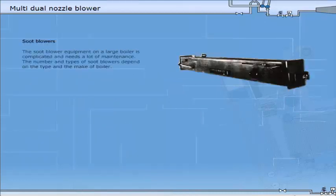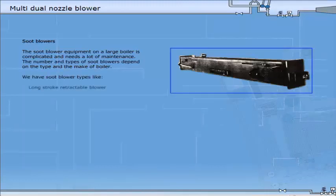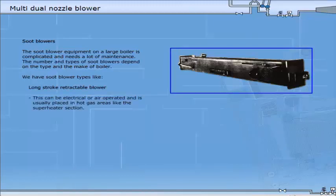The soot blower equipment on a large boiler is complicated and needs a lot of maintenance. The number and types of soot blowers depend on the type and the make of the boiler. We have soot blower types like a long stroke retractable blower. This can be electrical or air operated and is usually placed in hot gas areas like the superheater section.